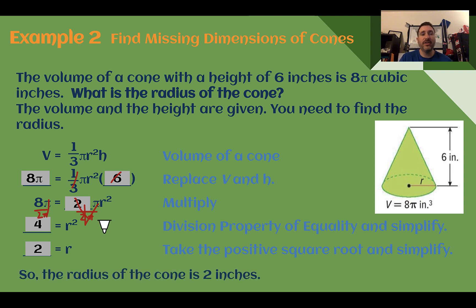And again, if we want to check to make sure we have the correct value, if I take what I got and plug it back in with a height of 6, 2 squared is 4. 4 times 6 is 24. 1 third of that is 8. So I do get the volume that it told me to start with if I plug it back in and calculate the volume of the cone.